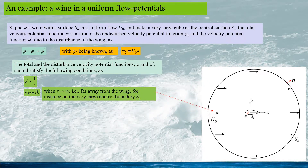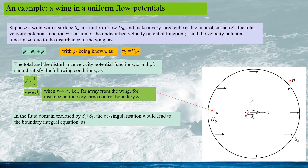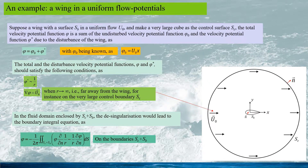Also in the far field, on the control surface R would be very large, where the uniform flow would not be disturbed, because of the far distance from the wing in the uniform flow. So in the fluid domain enclosed by SC plus SB, the desingularization would lead to the boundary integral equation as this.